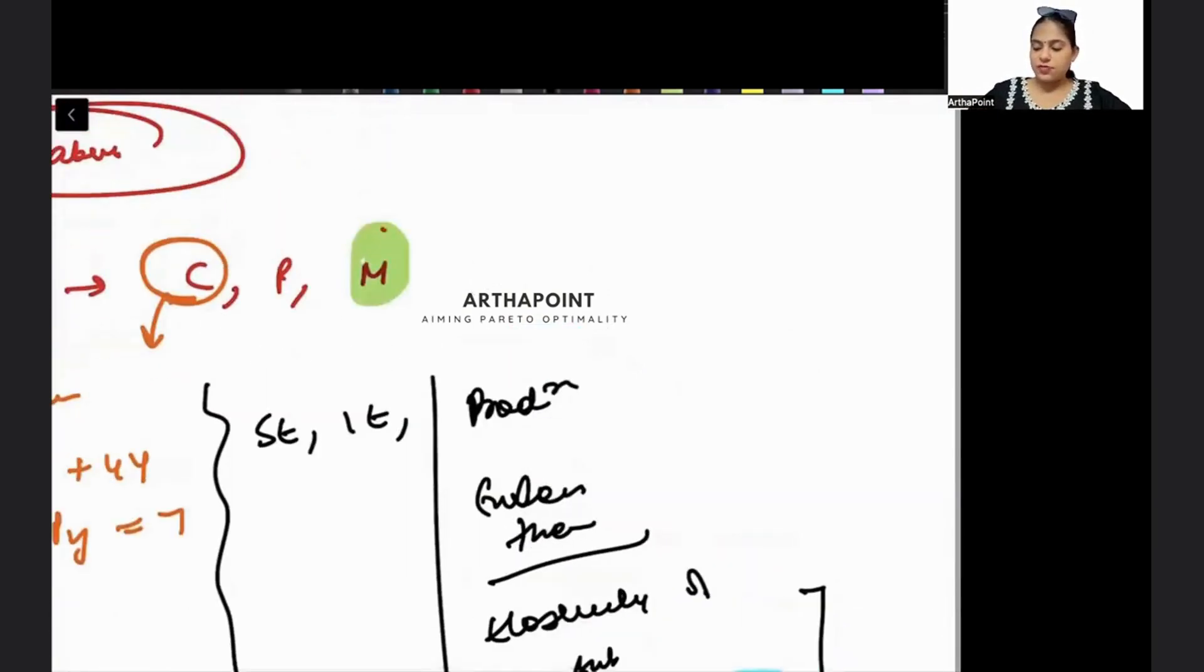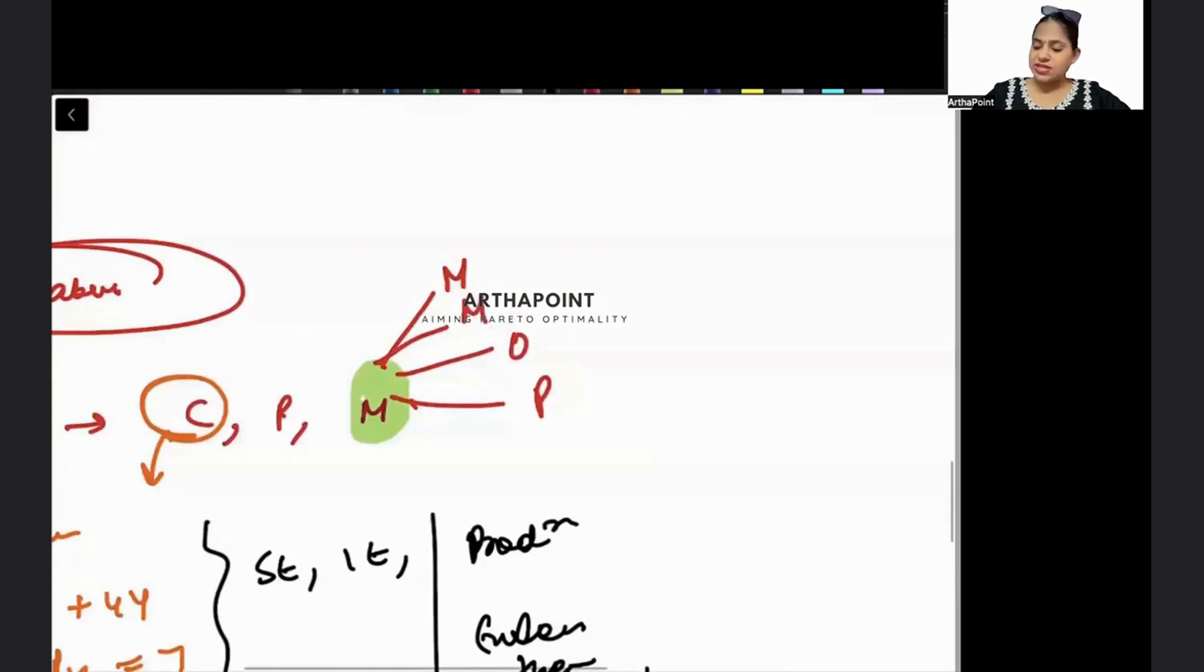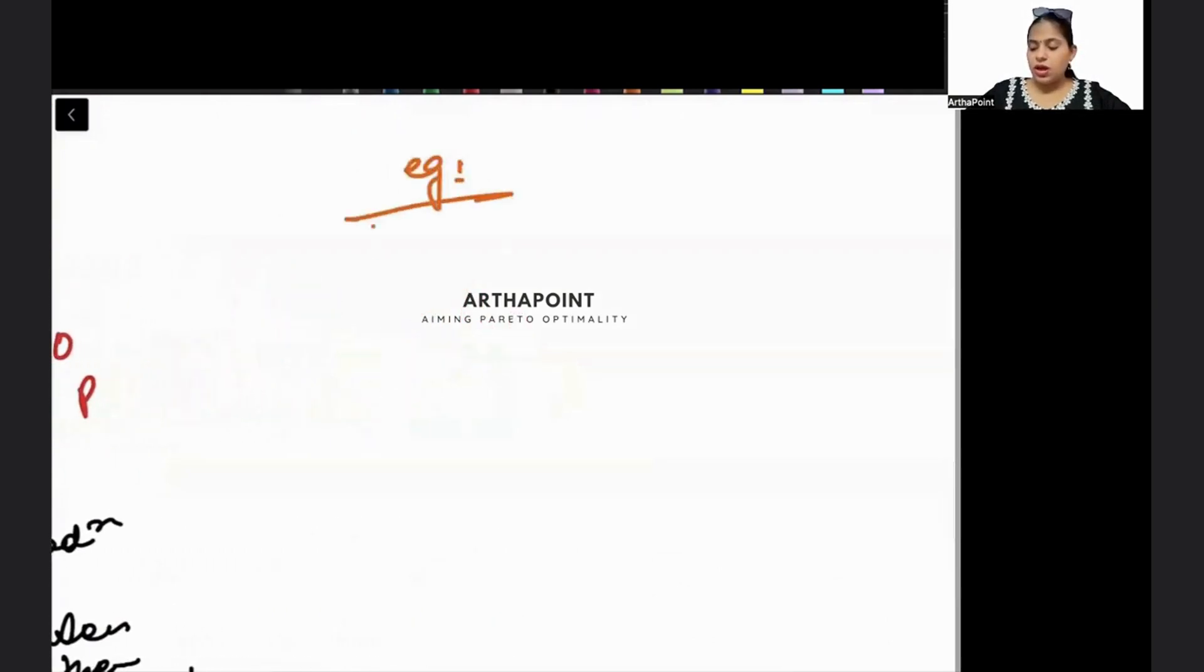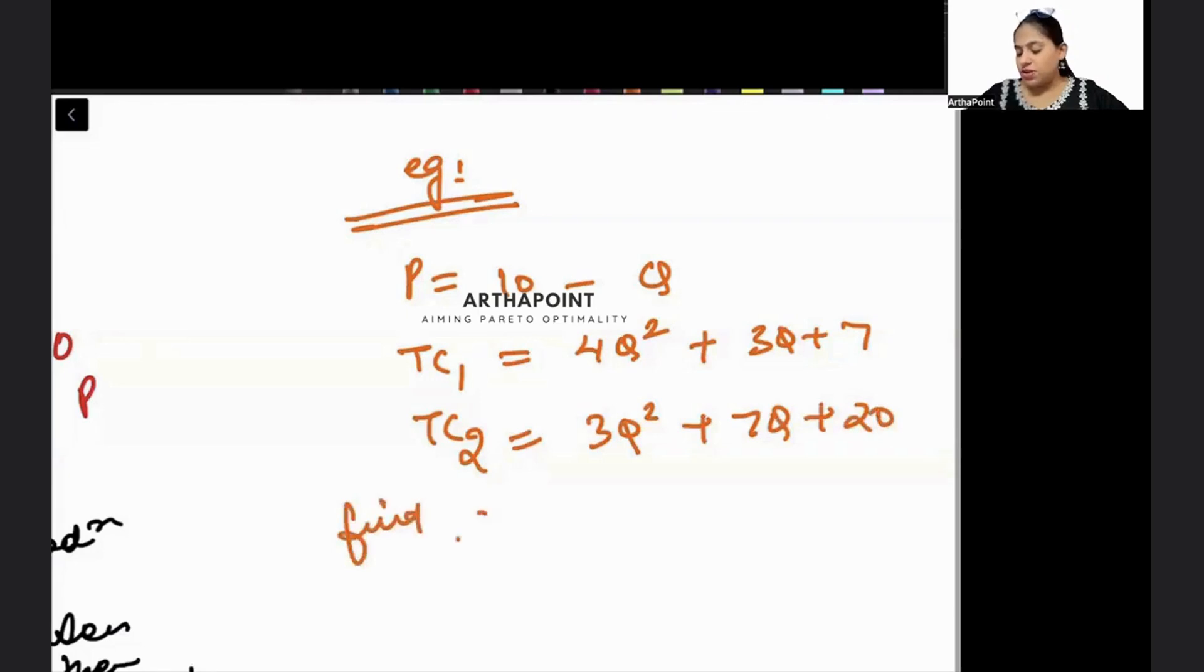Then you will be asked questions on different market forms - that means monopoly, monopolistic, oligopoly, perfect competition, etc. Just say, for example, I give you P equals 10 minus Q, and I give you total cost function of plant one is 4Q square plus 3Q plus 7, total cost function of plant two is 3Q square plus 7Q plus 20. This is a multi-plant monopolist. Find the quantity he will be selling with the two plants and how much he will be producing with plant two. This kind of questions can be asked in exam. Then there will be questions on welfare economics.